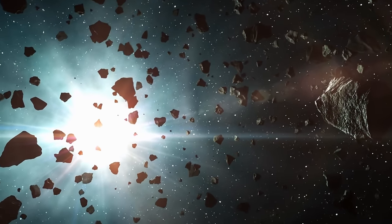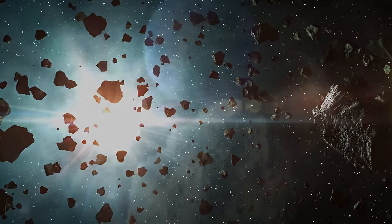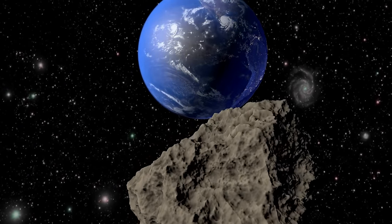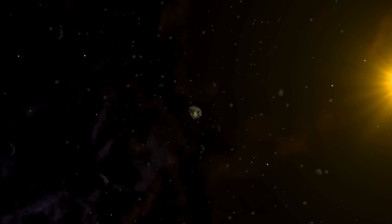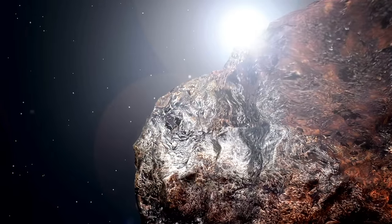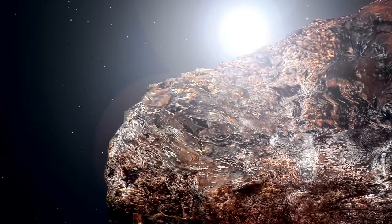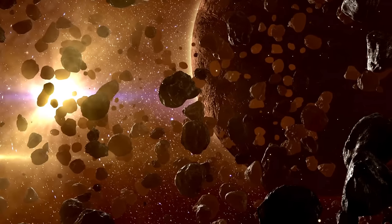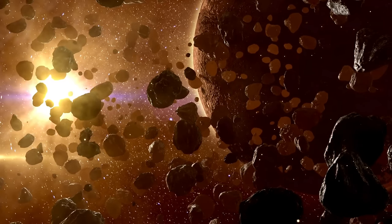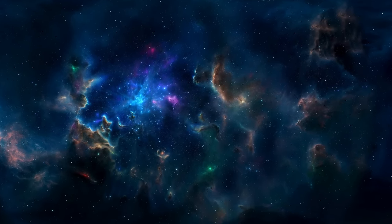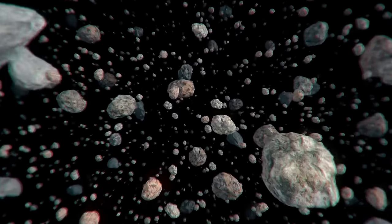Initially, scientists were uncertain whether Oumuamua was an asteroid or a comet. The distinction between the two lies in their composition, with comets composed of ice and asteroids rocky. At first, Oumuamua was classified as an asteroid. However, as it passed by the sun on September 9, 2017, additional measurements indicated slight acceleration, which is a characteristic of comets. This acceleration puzzled scientists, as Oumuamua accelerated more than predicted.